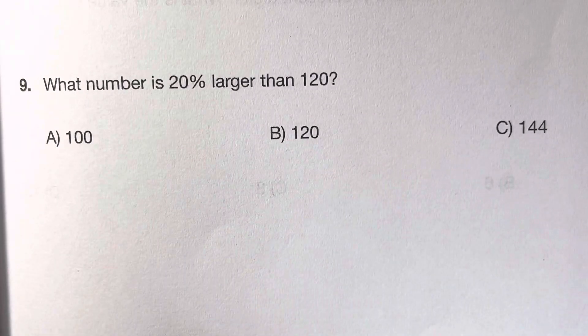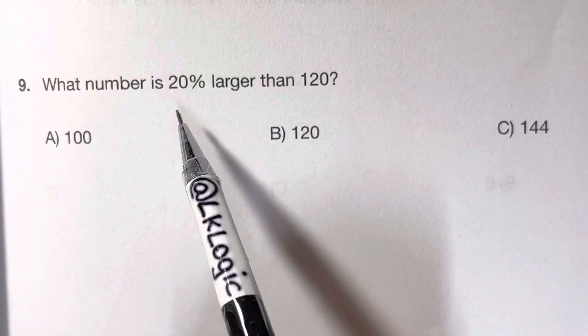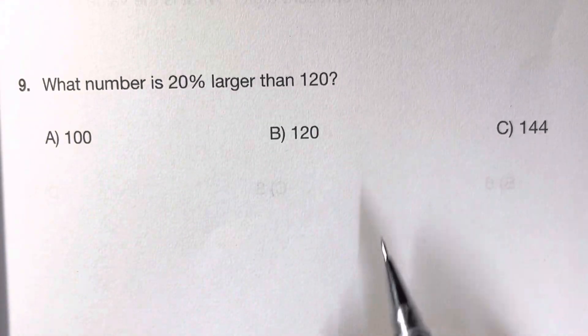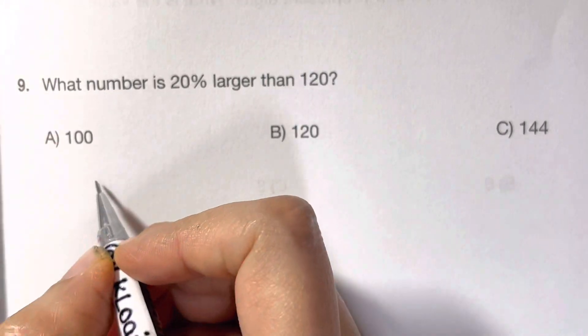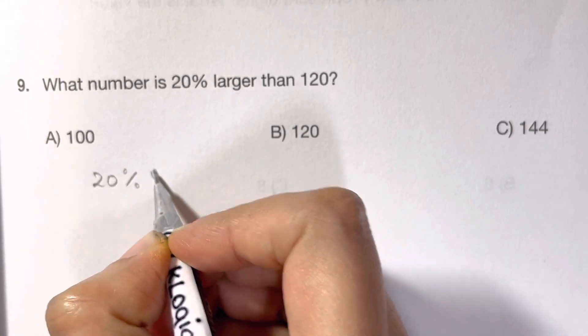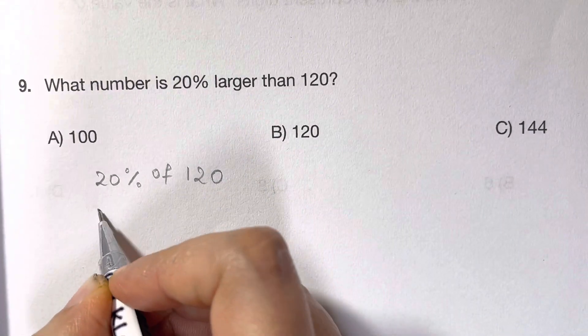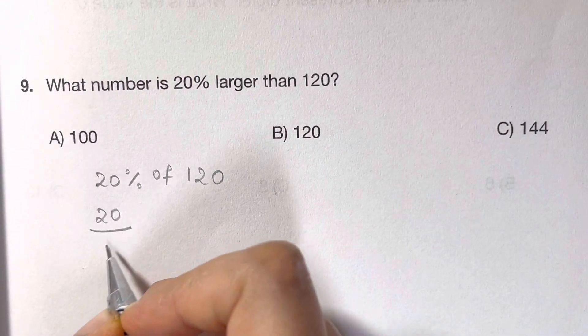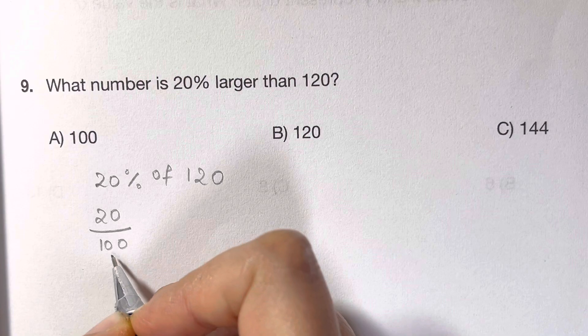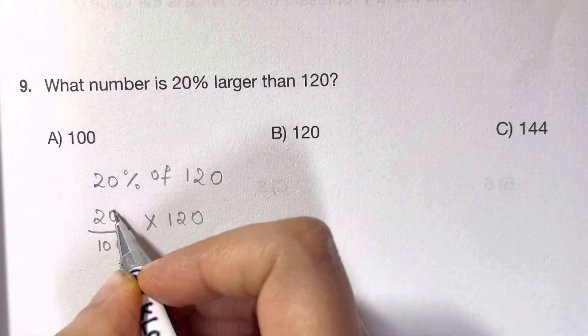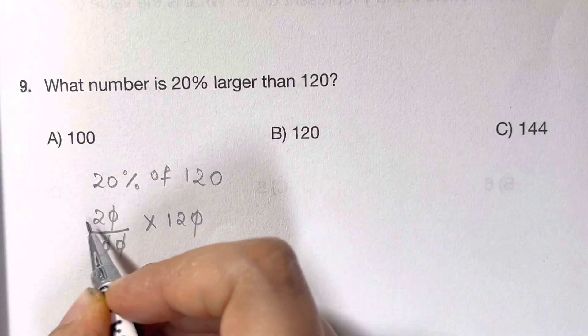20 percent larger than 120. So first let us solve 20 percent of 120. So 20 percent, that's 20 out of 100, times 120. Cancel out the zeros, so you're left with 12 times 2. That's equal to 24.